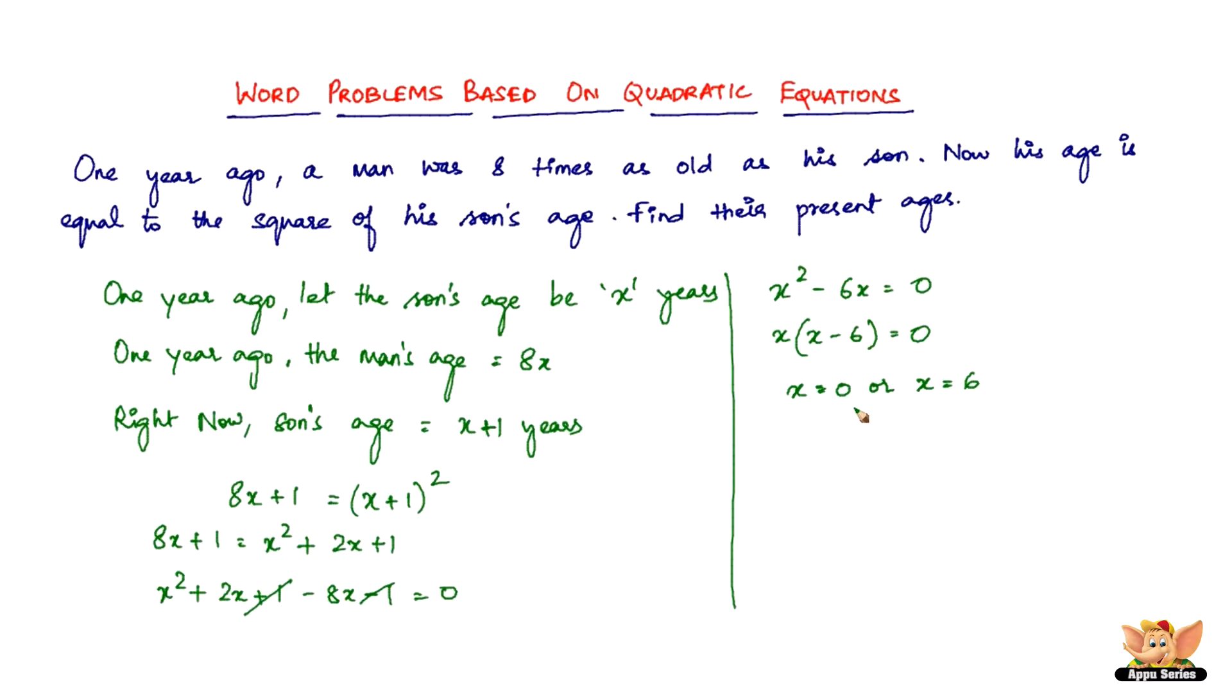The age definitely cannot be zero. The son's age cannot be zero. Therefore, the son's age one year ago was 6. Right now, it is 7. The man's age is the square of the son's age, so that's 7² = 49 years. The man is 49 years old and the son is 7 years old.